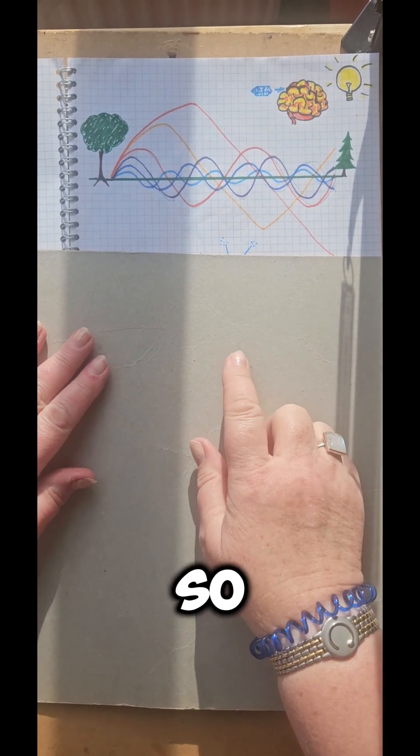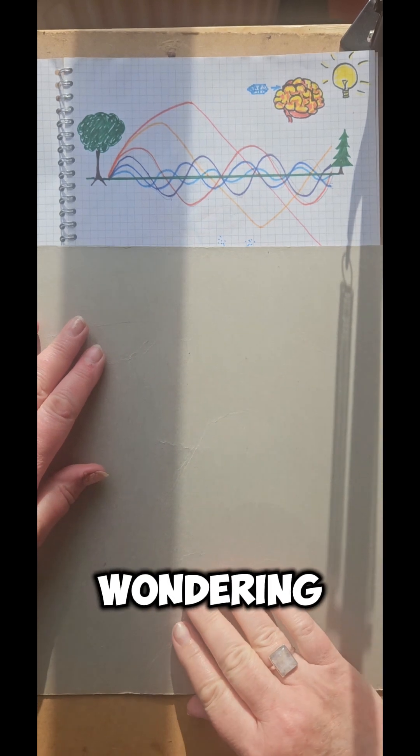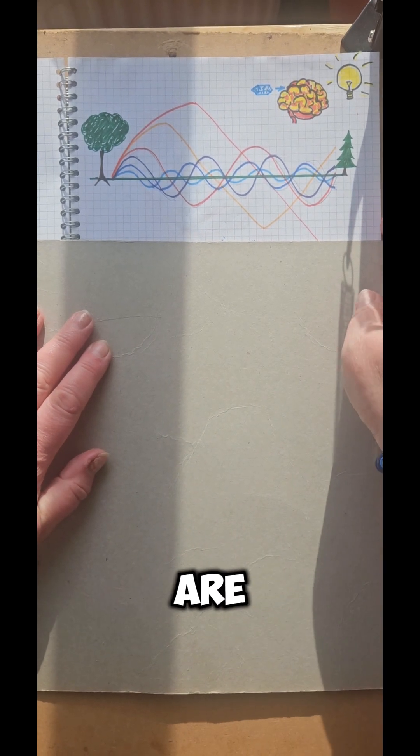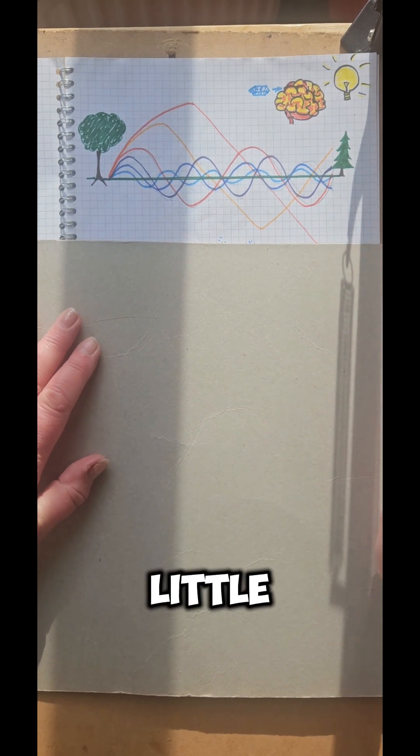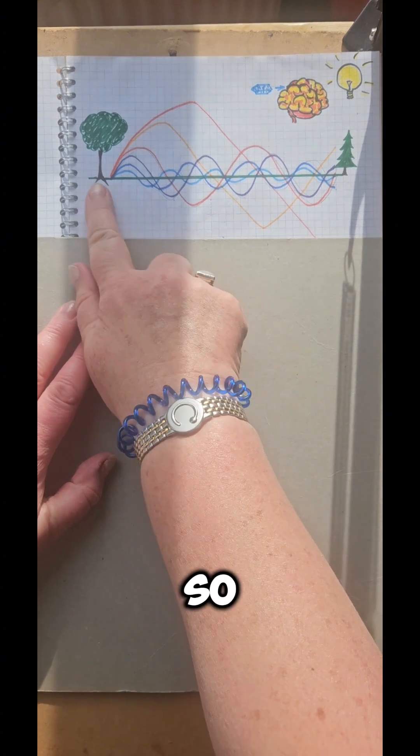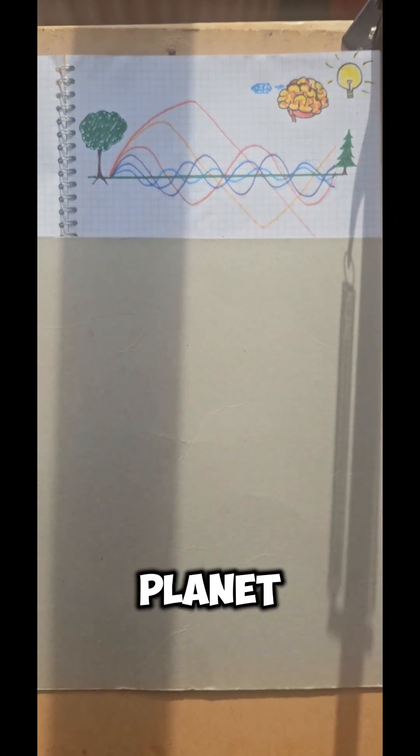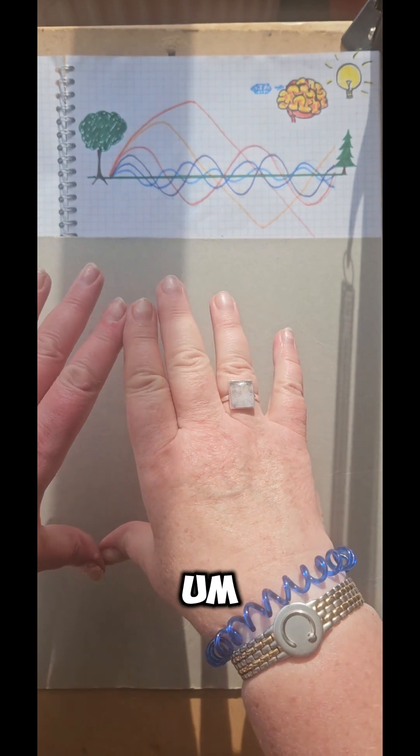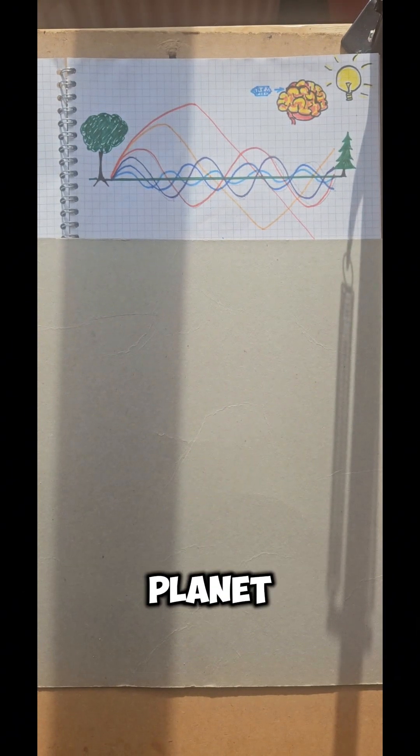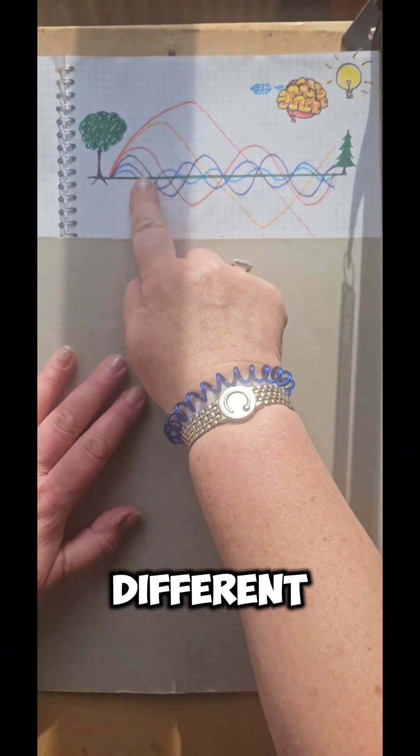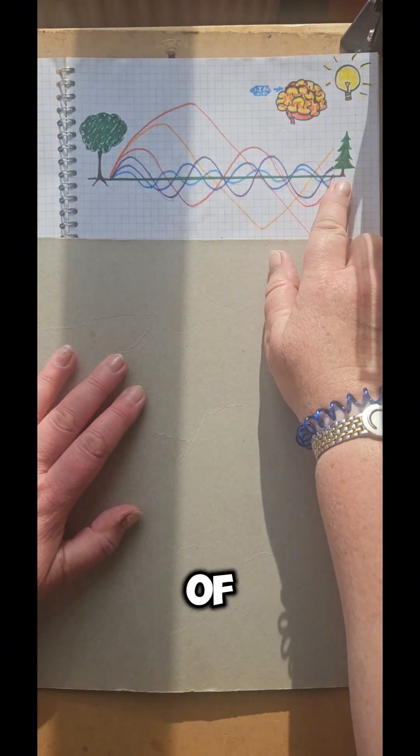So let's start with the basics. If we're wondering why sacred sites are where they are, we need to understand a little bit about Earth energy. Imagine the green line is the surface of the Earth. We're on this huge planet. It is an electromagnetic planet that gives off all these different forces and fields of electricity.